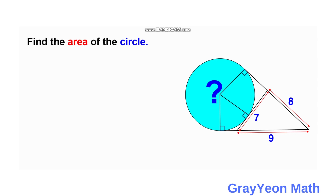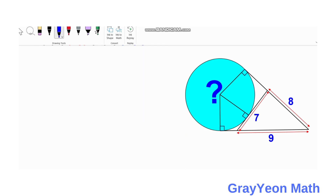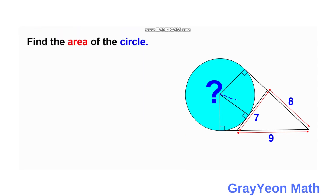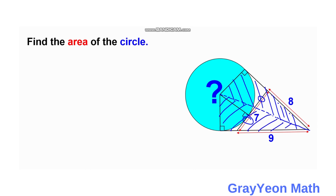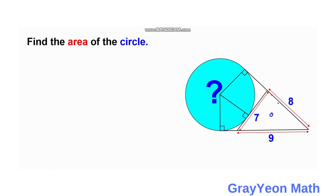Our idea for this problem is to compare the areas of portions. These two triangles are equal to the area of this one plus this triangle, which is equal to the area of this triangle and these two triangles plus these two triangles.